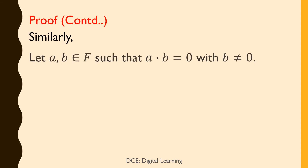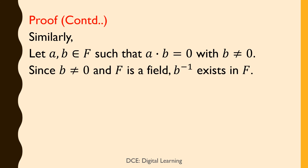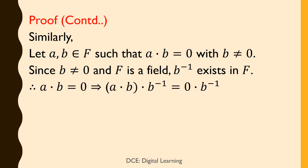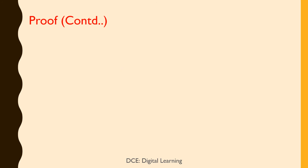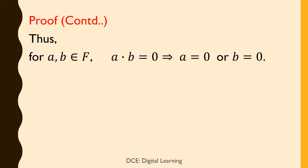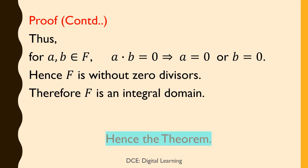Similarly, let a, b belong to F such that a·b = 0 and b ≠ 0. Since b ≠ 0 and F is a field, b⁻¹ exists in F. Therefore, a·b = 0 implies a·b·b⁻¹ = 0·b⁻¹, which implies a·(b·b⁻¹) = 0, which implies a·1 = 0, which implies a = 0. Thus, for a, b belonging to F, a·b = 0 implies a = 0 or b = 0. Hence, F is without zero divisors. Therefore, F is an integral domain. Hence the theorem.